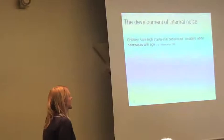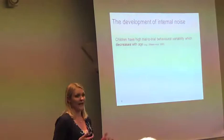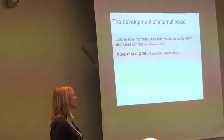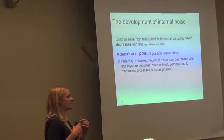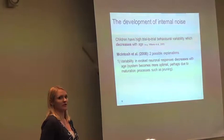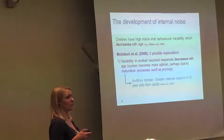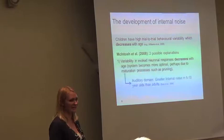McIntosh has suggested that children have increased trial-by-trial intra-participant variability in behavioural measures such as reaction time, and this decreases with age. McIntosh gave two possible explanations for this decreasing behavioural variability. Firstly, perhaps most intuitively, decreased behavioural variability was accompanied by decreased neuronal variability — trial by trial, neuronal responses also become less variable — and that might be due to maturation processes such as pruning. This fits with some research from the auditory domain, which suggests there might be greater internal noise in 5 to 10-year-olds than adults.